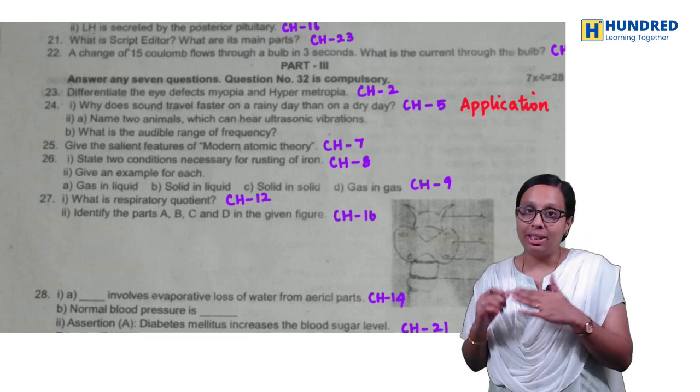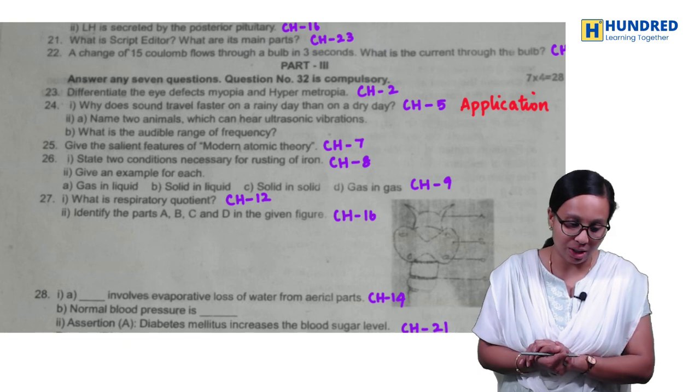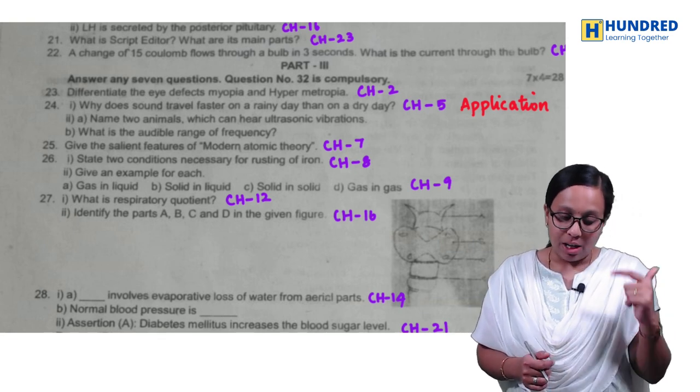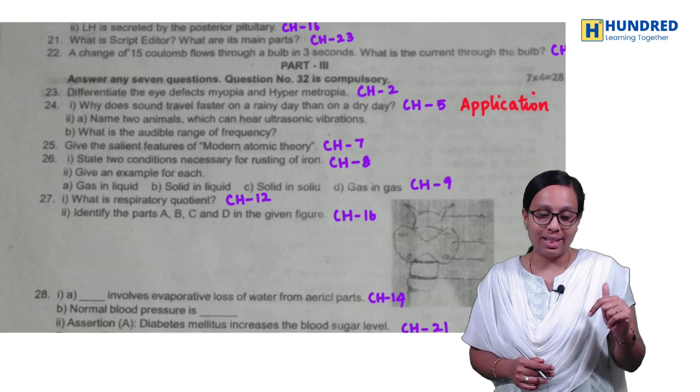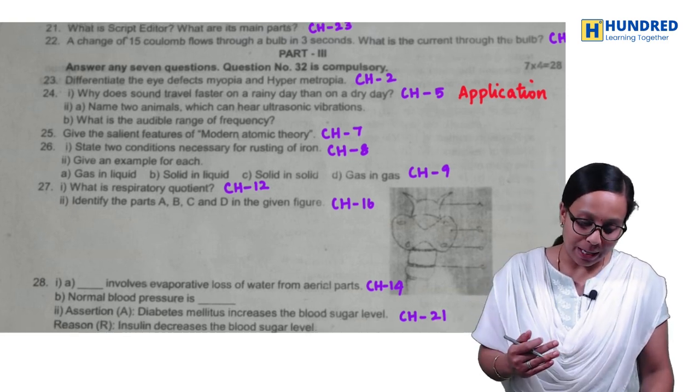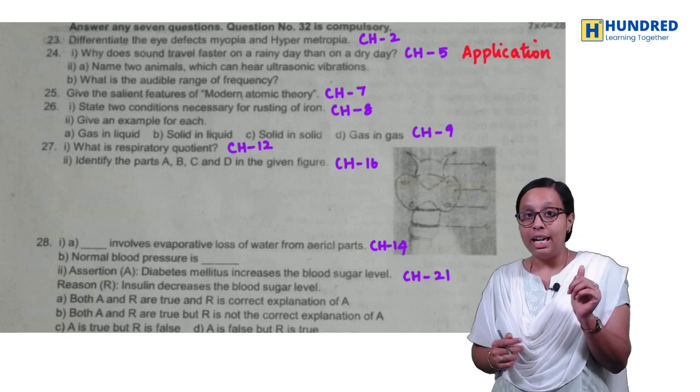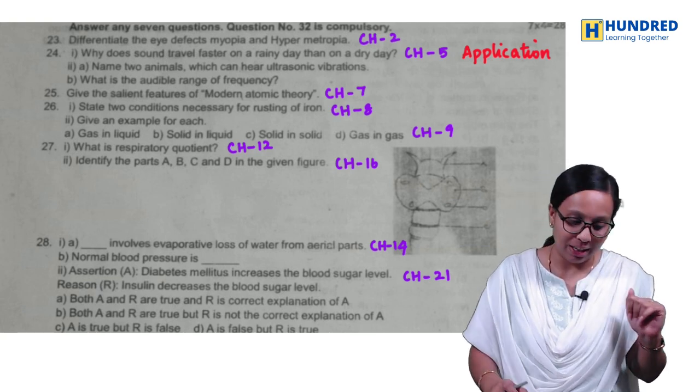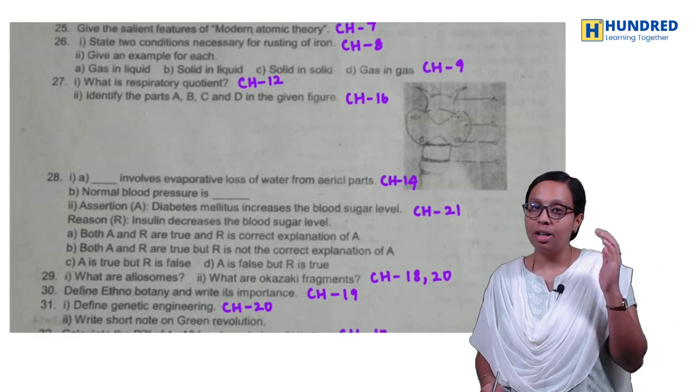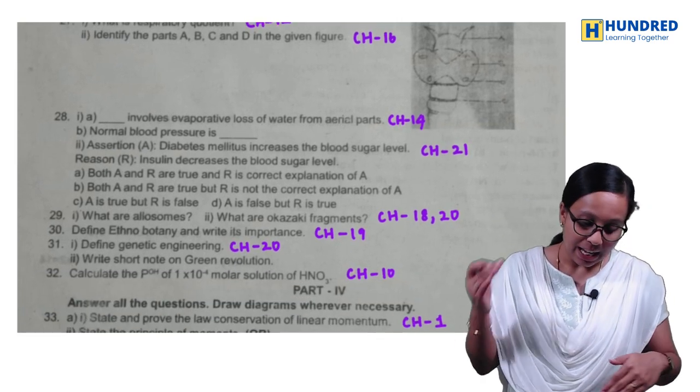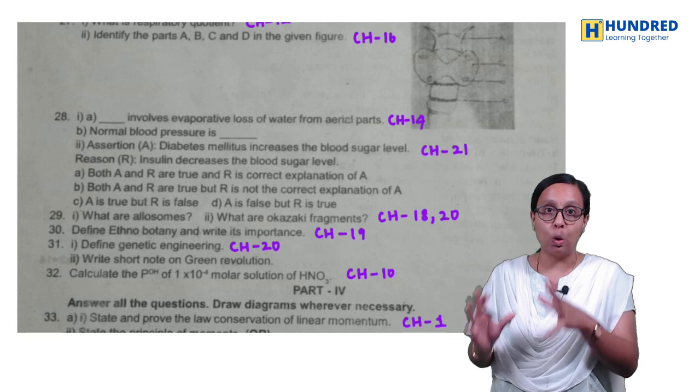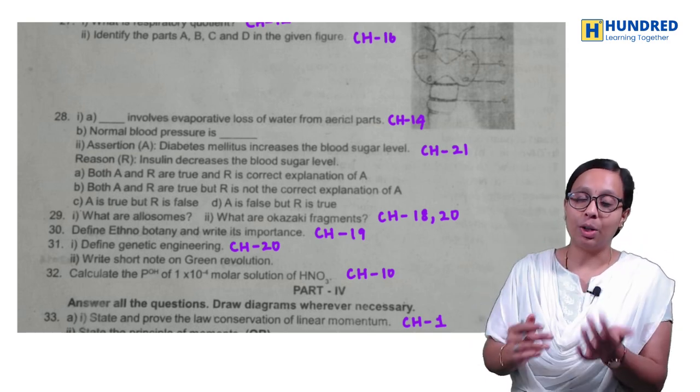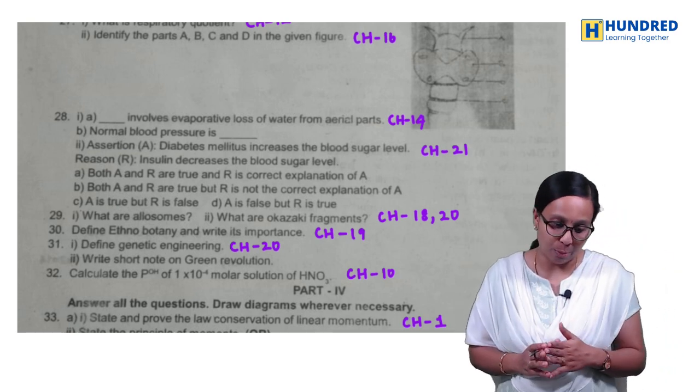Salient features of modern atomic theory. So, importance seven marks, four marks. Two conditions for rusting of oil. These two, repeated question. Give an example for each. This is, live, discuss question. So, that is also an easy question. So, respiratory quotient. So, here is one diagram. Here is one diagram. In the question paper, two diagrams. So, you can see the same diagram. Easier six marks score. And, that is, recent assertion questions. So, there are questions. In the questions, all the questions are important. So, all the questions are important. So, if you're learning that, you can see the question paper, easily, 95, you can score.